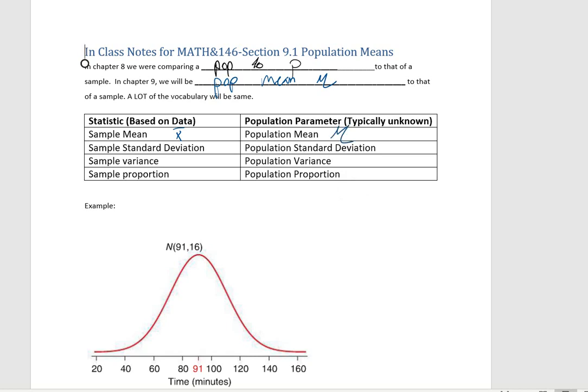The sample standard deviation is going to be s and the population standard deviation is supposed to be sigma. We're not going to worry about variance. The sample proportion is P hat, remember that's the percentage, and the population proportion is P.